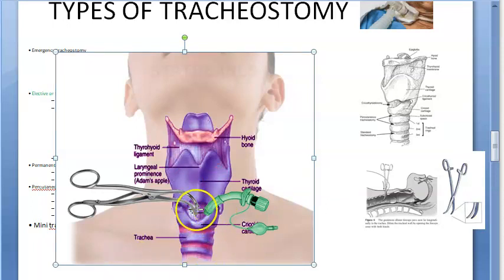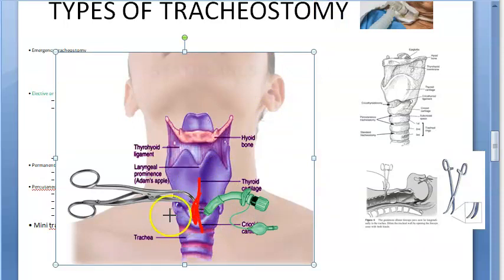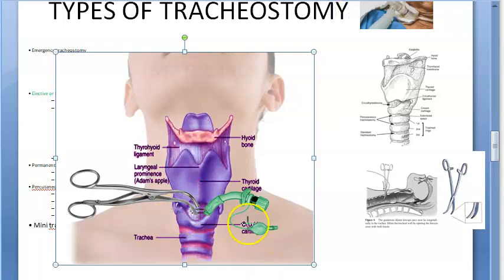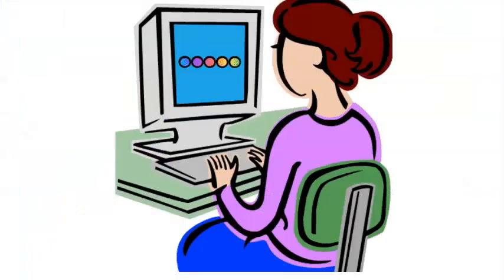In this procedure, the skin incision is vertical and the membrane is cut with a transverse incision. They can then follow this with an orderly tracheostomy if needed.